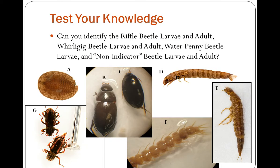So now you can test your knowledge to see what you retained and if you're able to identify all these beetles. Try to identify the Riffle beetle larvae and adult, the Whirligig beetle larvae and adult, the Water Penny beetle larvae, and the non-indicator beetle larvae and adult. Go ahead and pause this video now and restart it when you're ready to see the answers. You can write it down on paper or do it in your head.